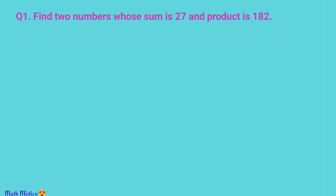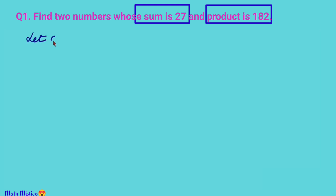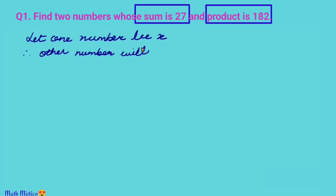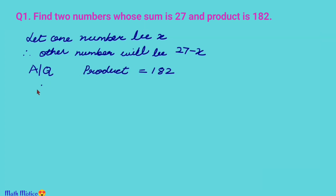So let's try the first problem. The keywords here are: sum of two numbers is 27 and the product is 182. So let one of the numbers be x. As the sum is 27, the other number will be 27 minus x. The second statement says that the product of the numbers is 182.